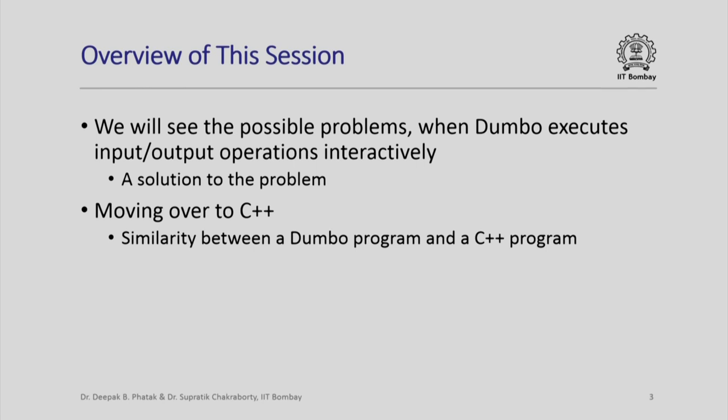In this session, we will see the possible problems when Dumbo executes an input or an output operation interactively, that is when it has to collect values from us and give values to us. We will also determine a solution to this problem. In the process, we will find that the program that we construct for Dumbo actually looks closer and closer to an actual C++ program. Indeed, we will see how conceptually the model that we have built of a computer in the form of Mr. Dumbo is actually very similar to the actual C++ programming language.